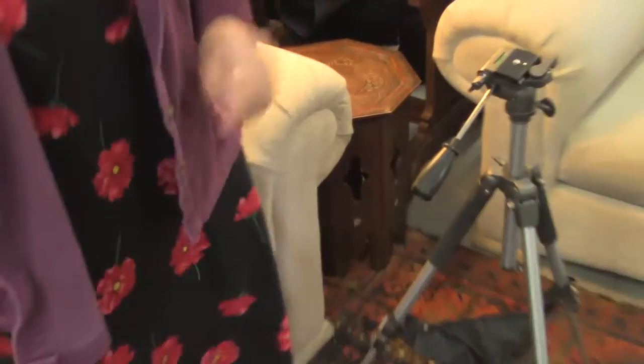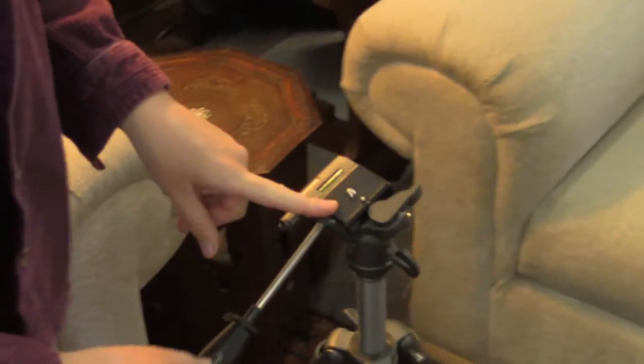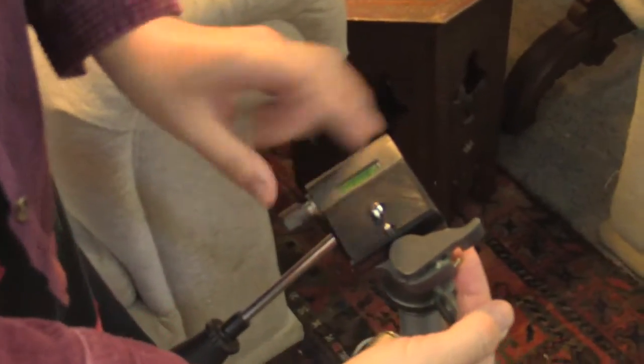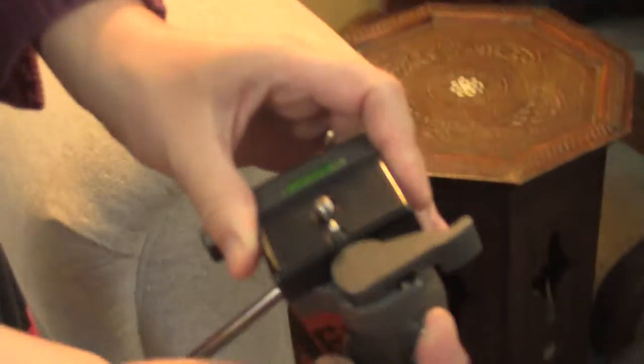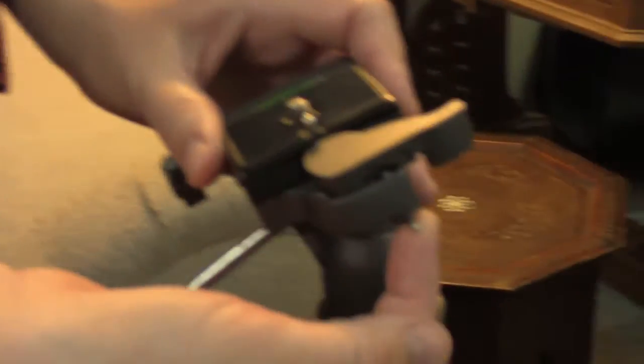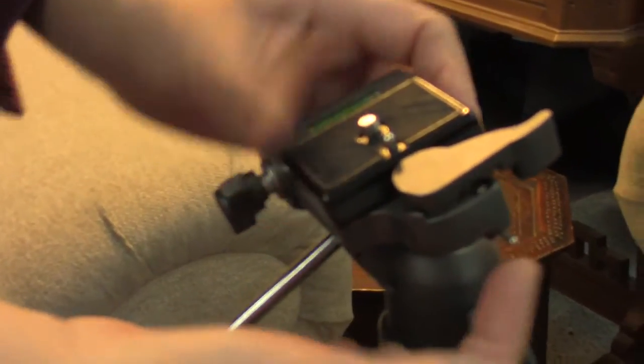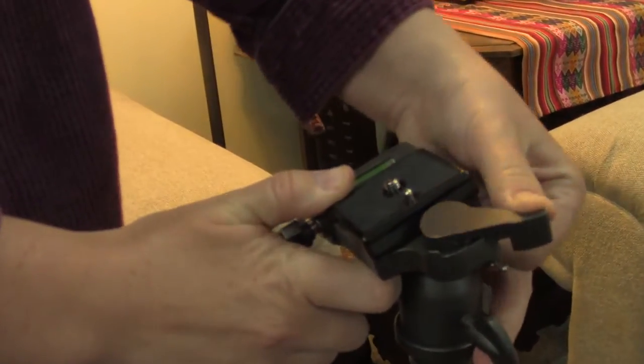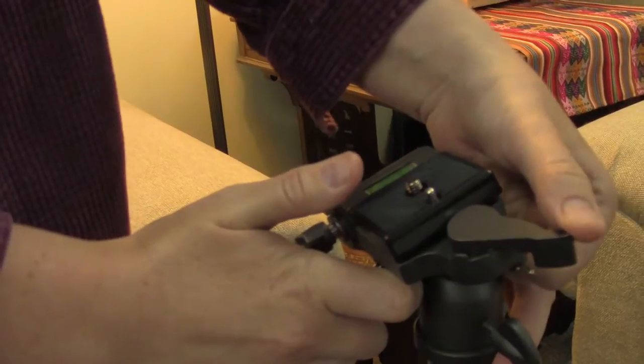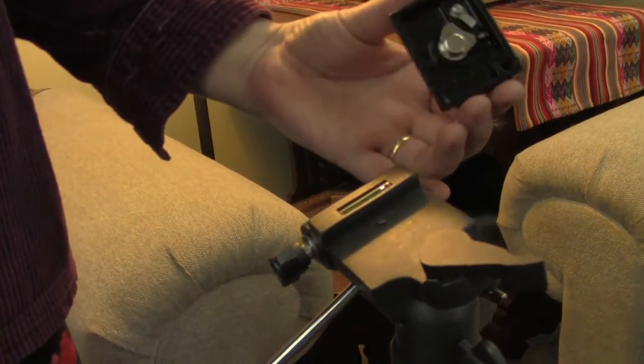To remove the quick release plate, first shift this little lever to the right to unlock it. Then you'll be able to move the thumb lever, and your quick release plate will pop out.